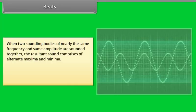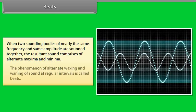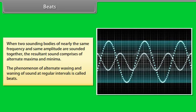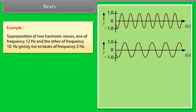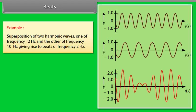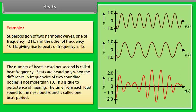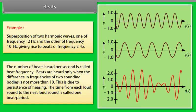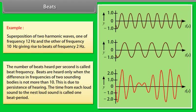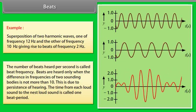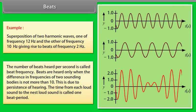Beats: When two sounding bodies of nearly the same frequency and same amplitude are sounded together, the resultant sound comprises alternate maxima and minima. The phenomenon of alternate waxing and waning of sound at regular intervals is called beats. For example, two harmonic waves — one of frequency 12 Hz and the other of frequency 10 Hz — when superimposed give rise to beats of frequency 2 Hz. The number of beats heard per second is called beat frequency. Beats are heard only when the difference in frequencies of two sounding bodies is not more than 10, due to persistence of hearing. The time from each loud sound to the next loud sound is called one beat period.